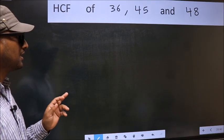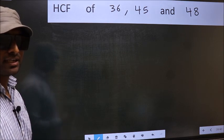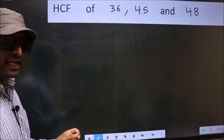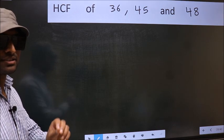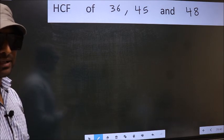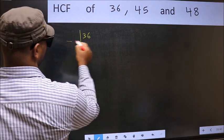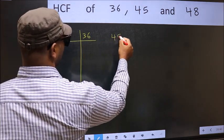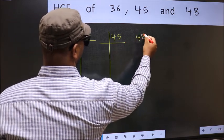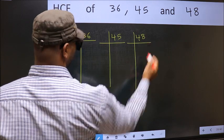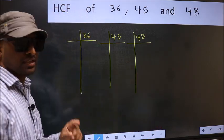HCF of 36, 45 and 48. To find the HCF, we should do the prime factorization of each number separately. 36, 45, 48. This is your step 1.